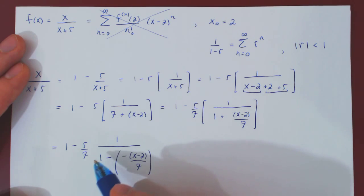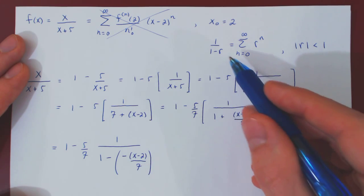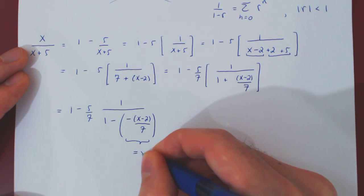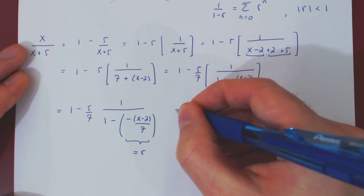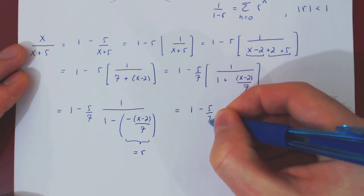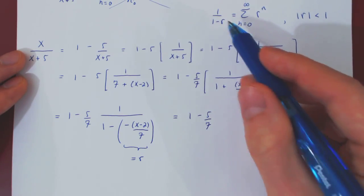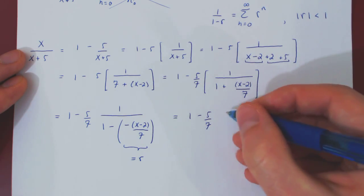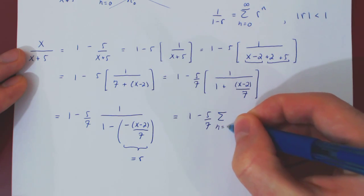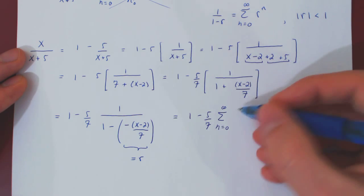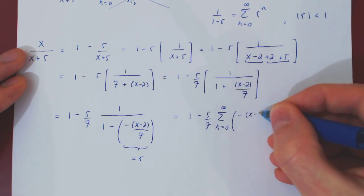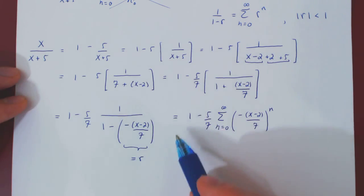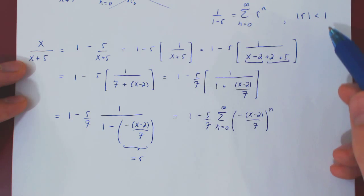And now we're good to go. So what we have is 1 over 1 minus this quantity, and this is now playing the role of r. So we have 1 minus 5 over 7 times 1 over 1 minus r, and we can now replace the simple expression 1 over 1 minus r by its series expansion. This will be the series from 0 to infinity of r to the n, where r is all of negative x minus 2 over 7, raised to the n. The equality is only valid if the absolute value of r is strictly less than 1.